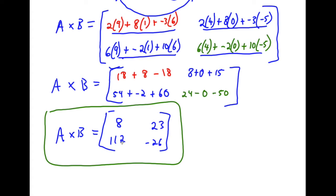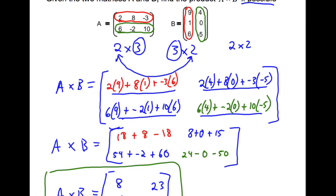So that's our product matrix. It's a 2 by 2. It came from multiplying a 2 by 3 and a 3 by 2.